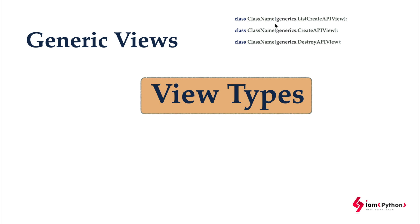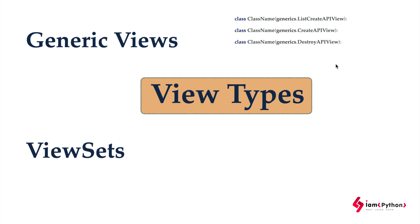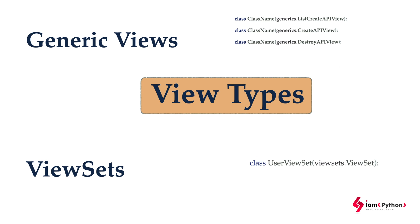There is another view type called generic views. Generic views are very easy and simple to use, and they are also class-based. For each class, you implement the desired generic behavior — there is ListAPIView, CreateAPIView, DestroyAPIView, UpdateAPIView, and many more. Here we inherit from these generic API views rather than the base APIView.